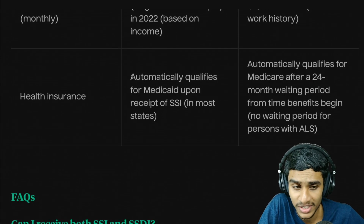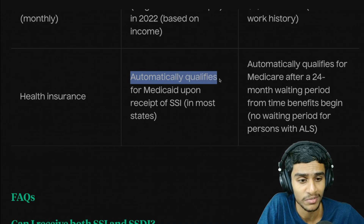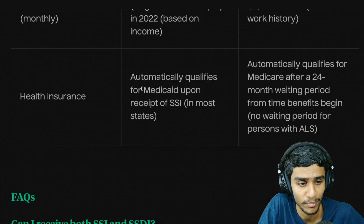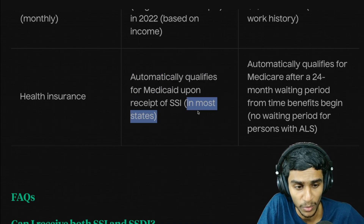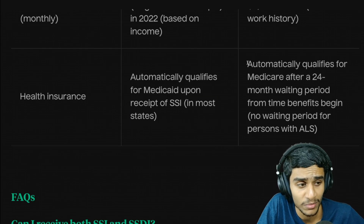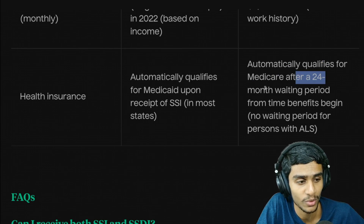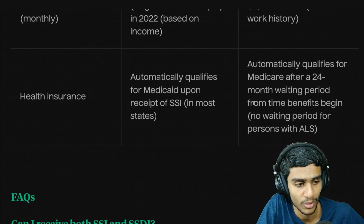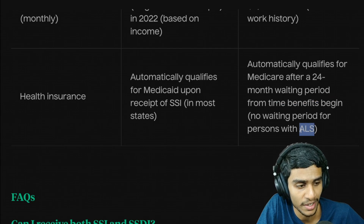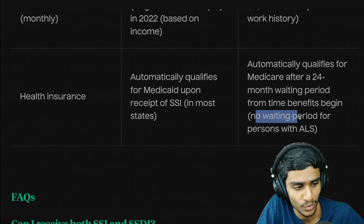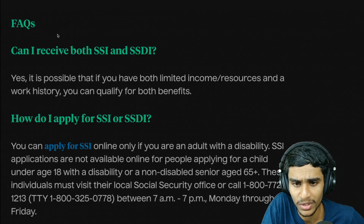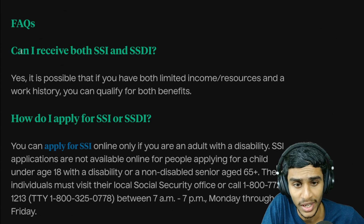Regarding health insurance: SSI recipients automatically qualify for Medicaid upon receipt of SSI in most states. SSDI recipients automatically qualify for Medicare after a 24-month waiting period from the time benefits begin. In the case of ALS, there is no waiting period.